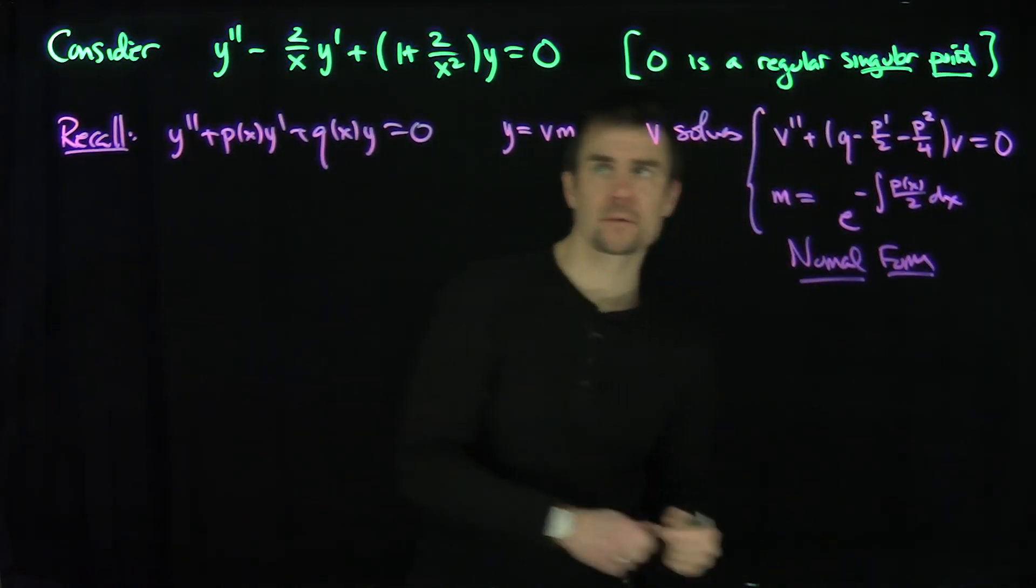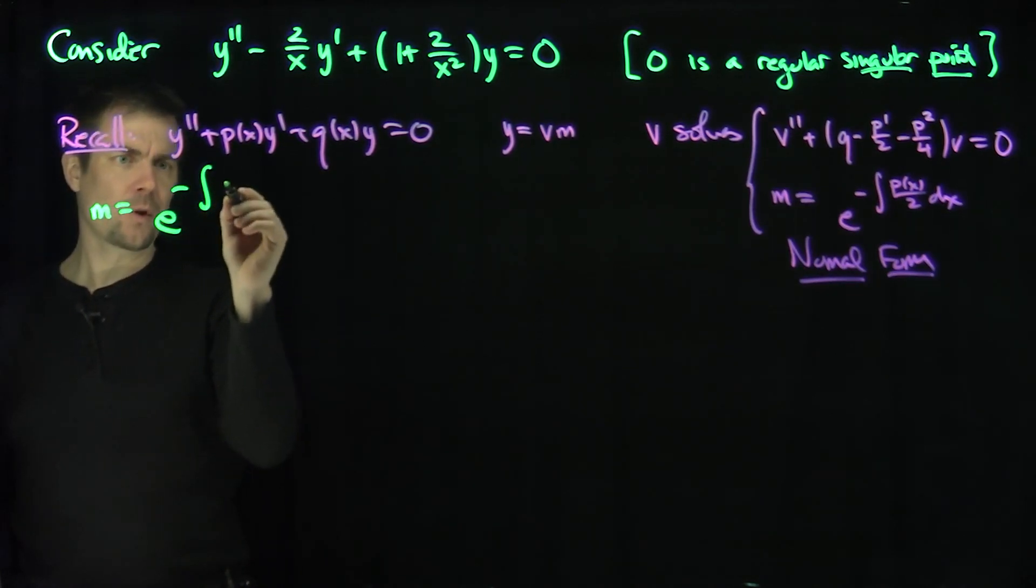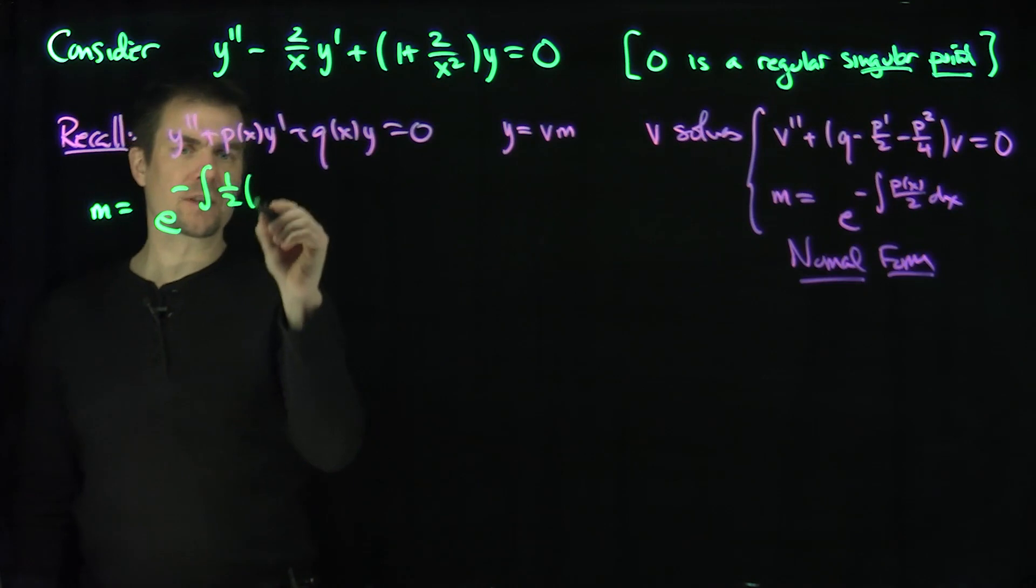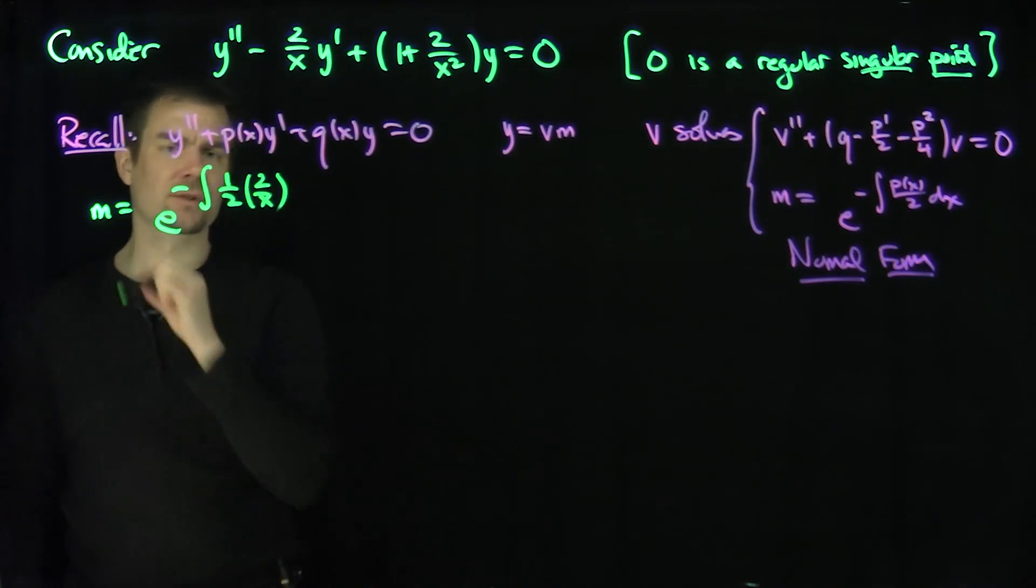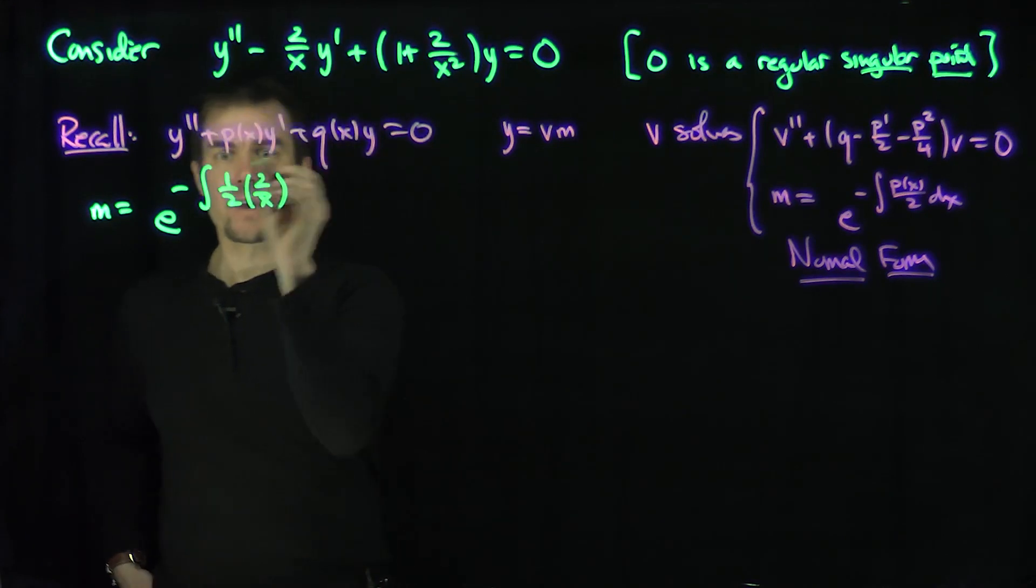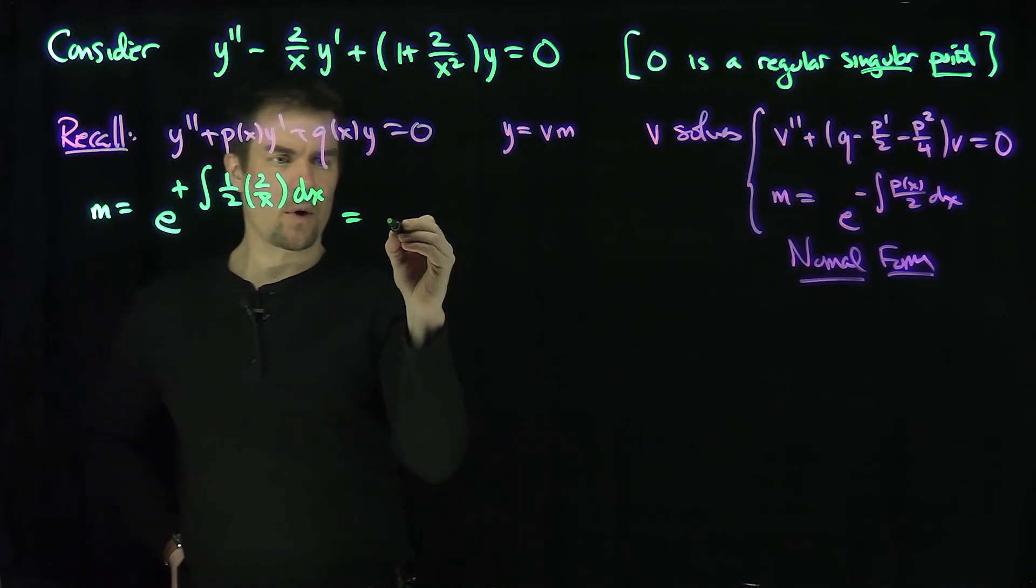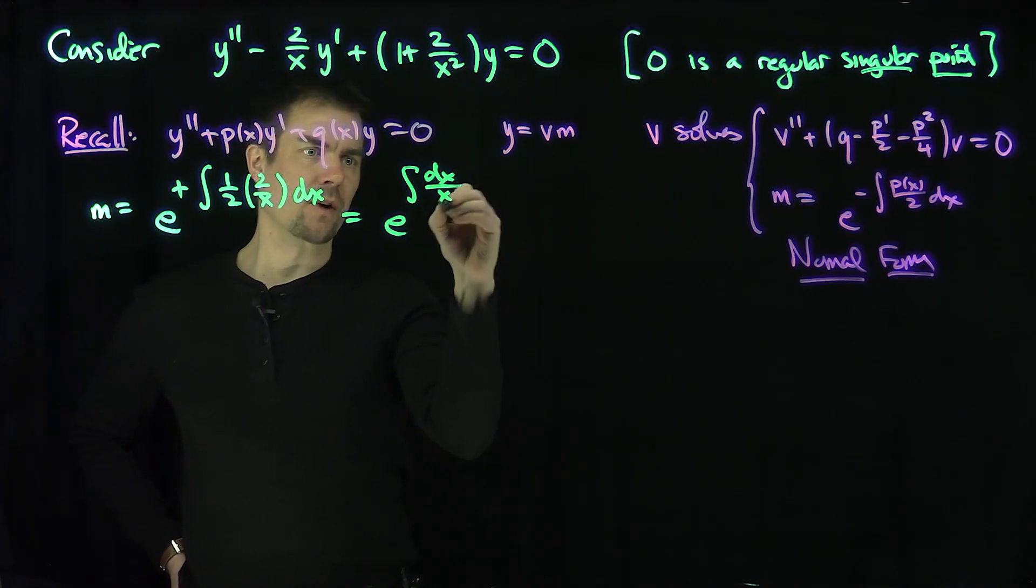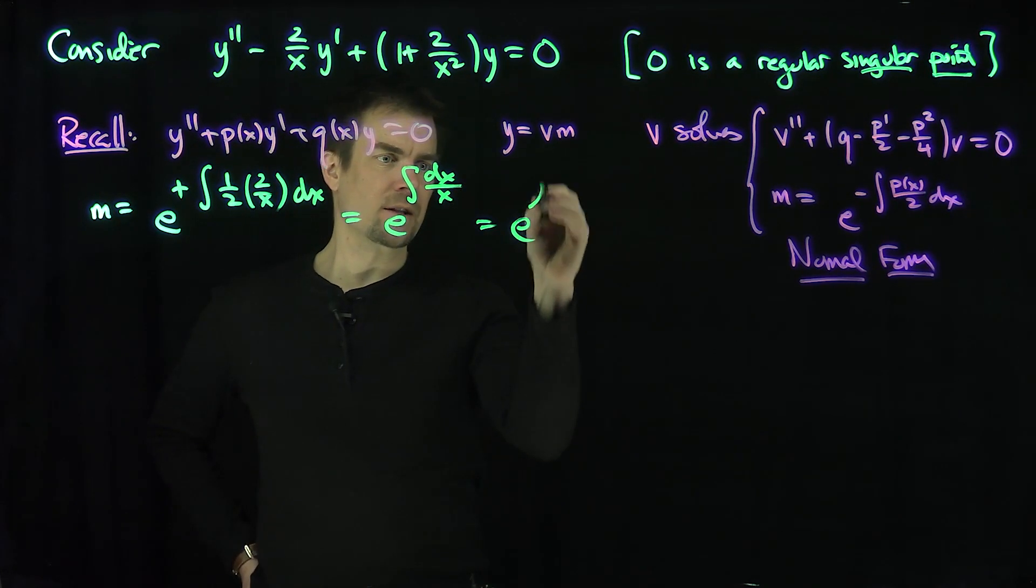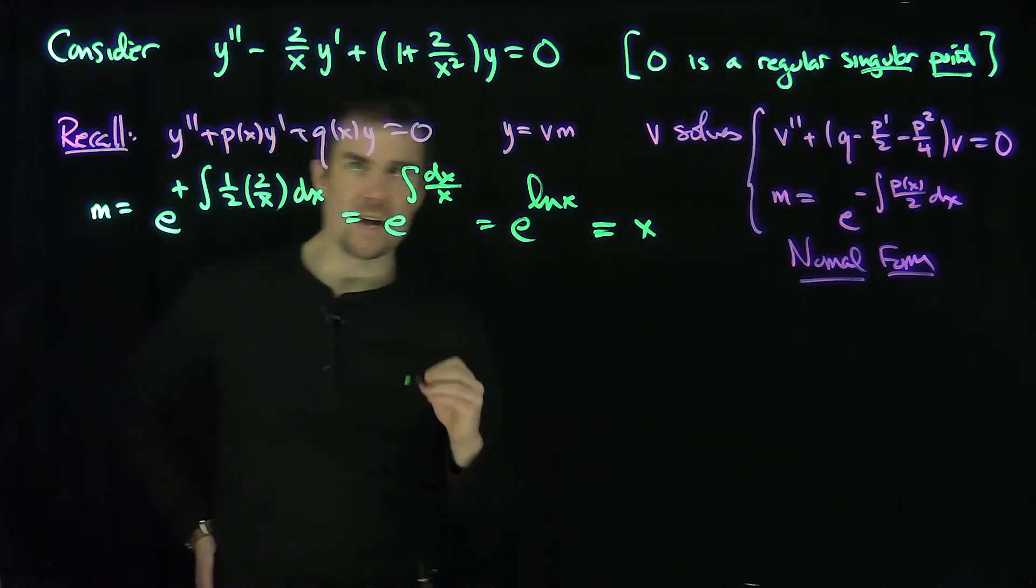This m is going to be e^(-∫(1/2)·(-2/x)dx). The negative turns into a positive. So m is e^(∫dx/x) = e^(ln x). So my m function here is x.